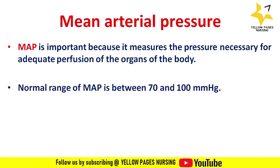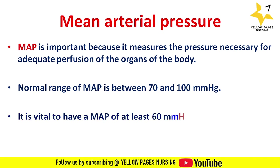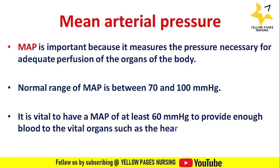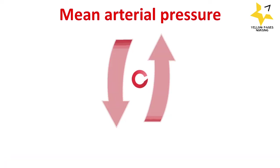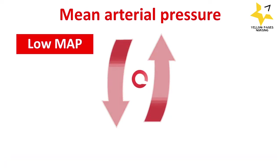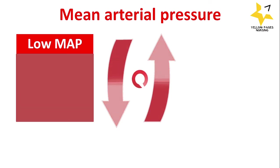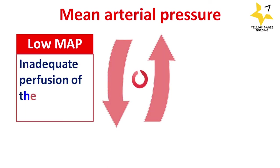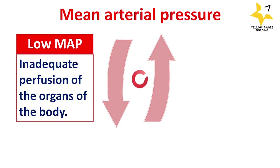It is vital to have a mean arterial pressure of at least 60 mmHg to provide enough blood to vital organs such as the heart, brain, and kidneys. When MAP falls below 60 mmHg, it can lead to inadequate perfusion of the organs, which may be caused by sepsis, stroke, hemorrhage, or trauma.